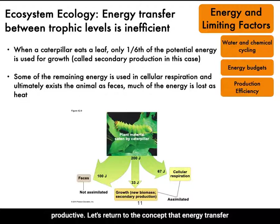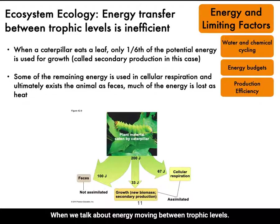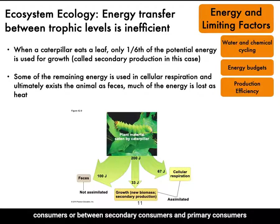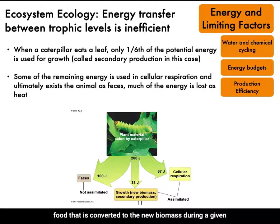Let's return to the concept that energy transfer between trophic levels is inefficient. When we talk about energy moving between trophic levels, we're talking about moving energy between producers and primary consumers, or between secondary consumers and primary consumers that they eat. The amount of chemical energy in the consumer's food that is converted to new biomass during a given period is called secondary production of the ecosystem.